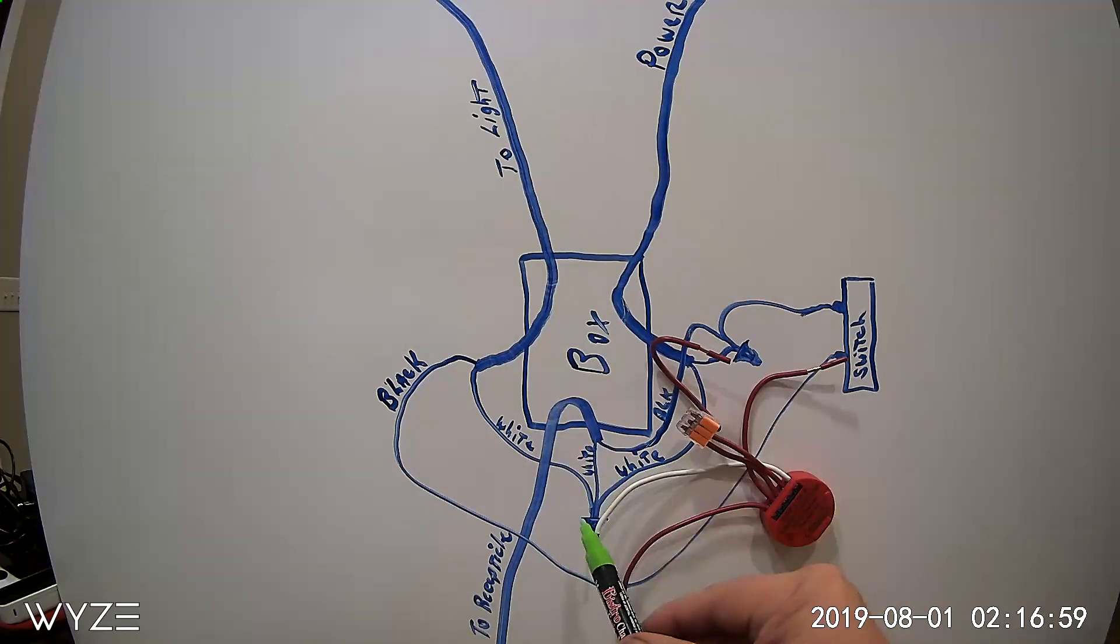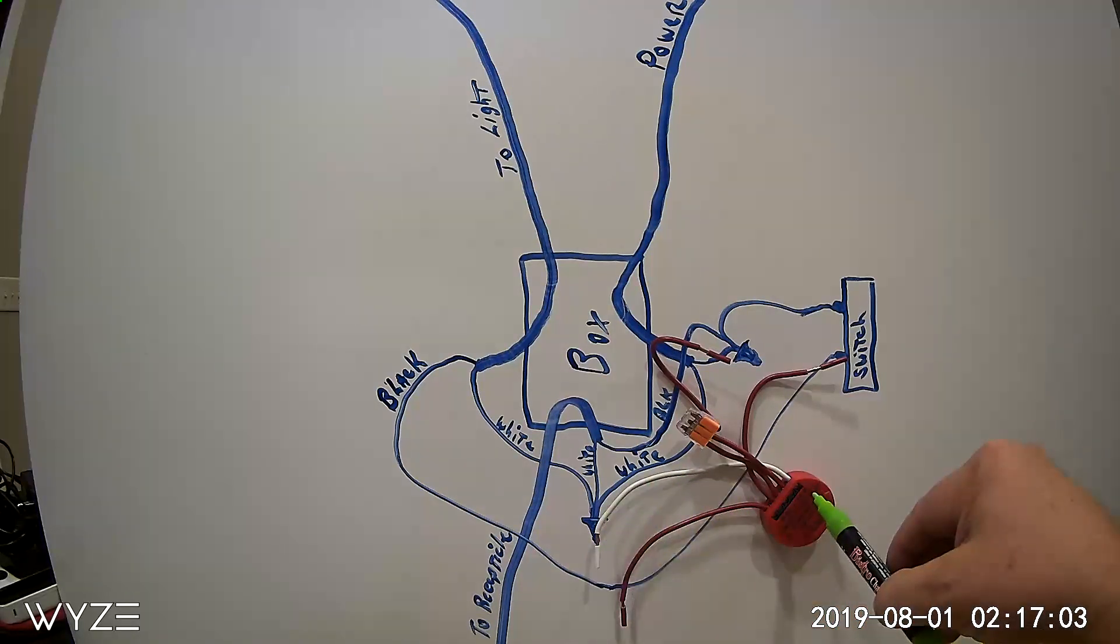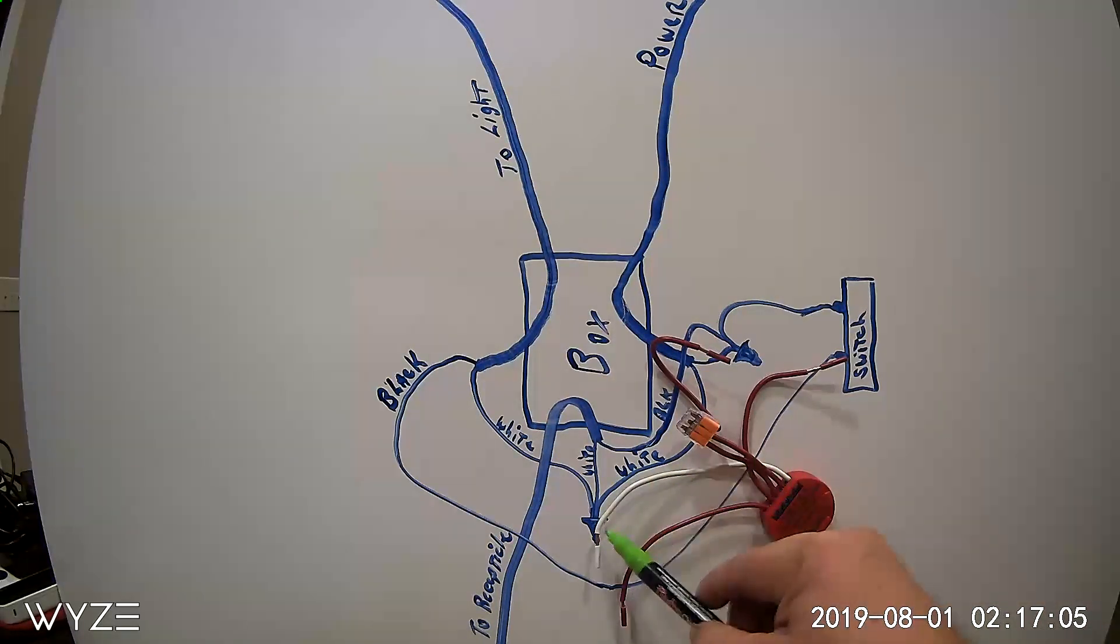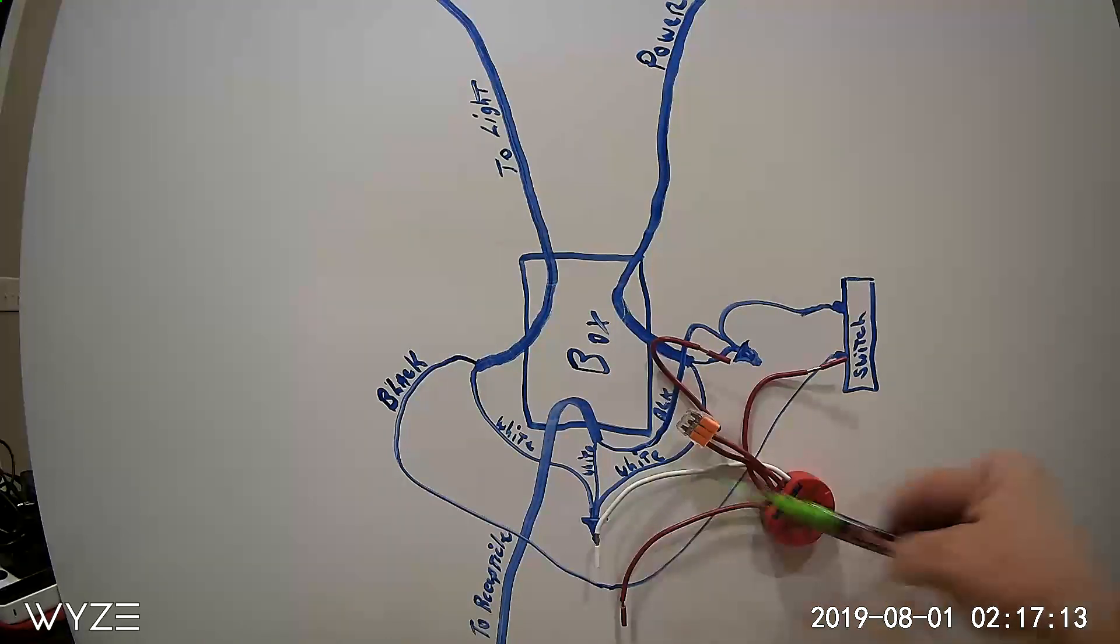You'll undo the white wire nut and you'll connect the white wire from the neutral. The white wire comes over and you will connect this white wire to the wire nut with the other white wires.